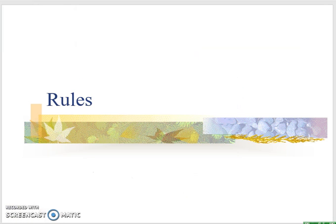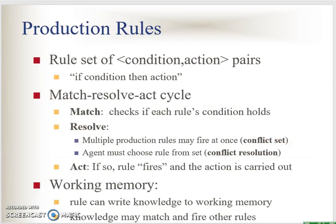So what are rules? Production rules is a set of conditions whereby the condition must have a value — whether it's true or false — and this condition and its value will trigger an action. So we have: if condition, then what action needs to be taken.